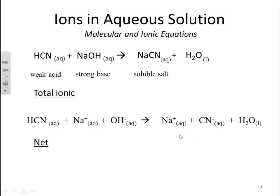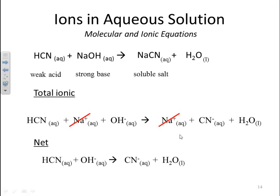Next is the net ionic, which gets rid of the spectators. In this case we have only one spectator, which is the sodium. We bring down the rest of the equation, which should be balanced in the net ionic equation.